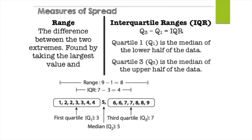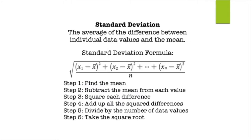Standard deviation is another way to measure the spread of a data set — it's the average of the differences between individual data values and the mean. We'll show how to find it by hand and also on a calculator. However, because you're in Algebra 1 and only have a TI-30XA calculator, which doesn't have standard deviation, you need to know the formula. If you're ever asked to find standard deviation, you must use the formula.